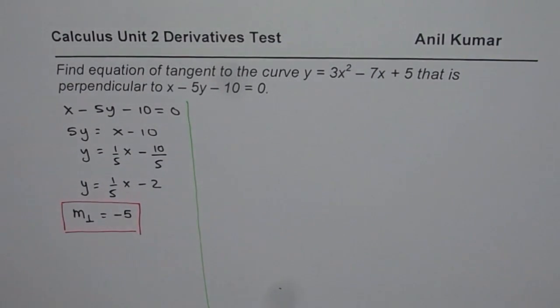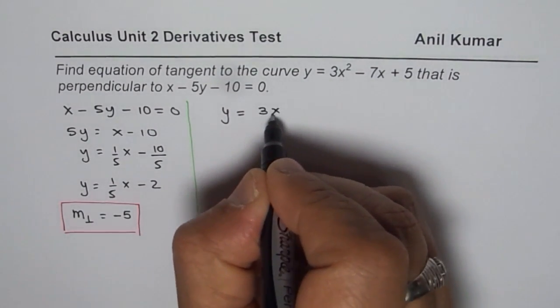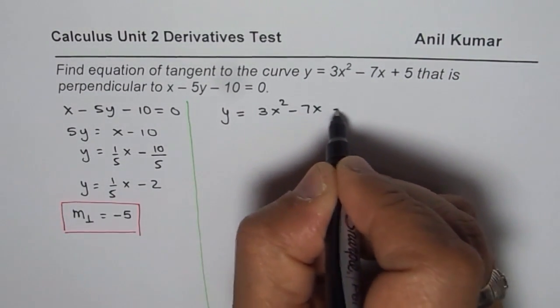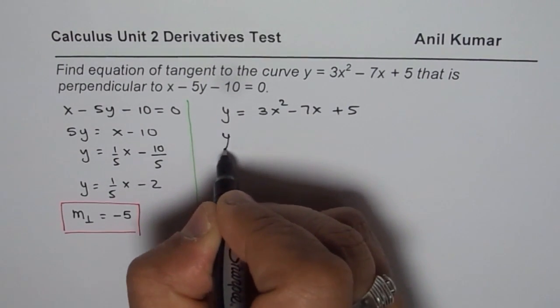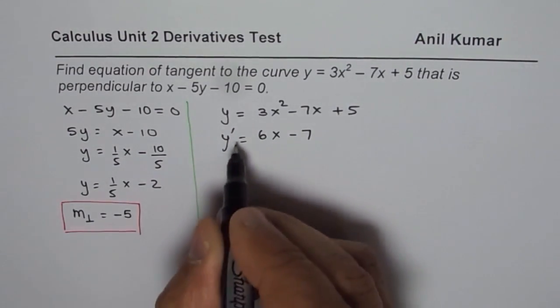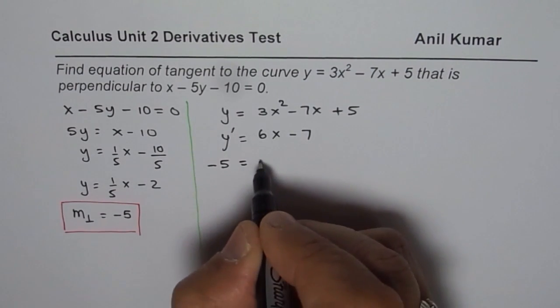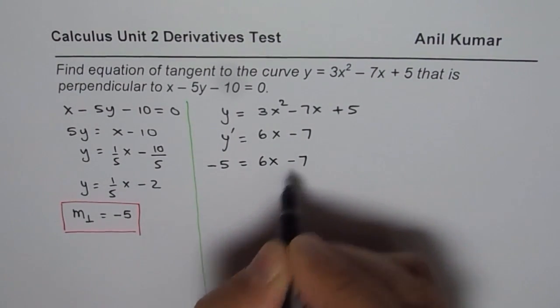So let us find derivative of the function itself. So y equals 3x squared minus 7x plus 5. Derivative for this is 6x minus 7. And this derivative should be minus 5. So we will write this as minus 5 equals 6x minus 7.